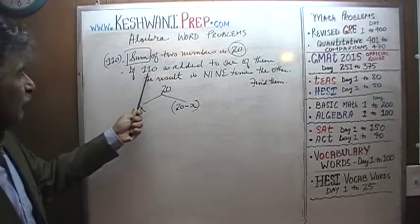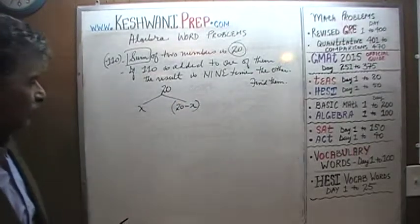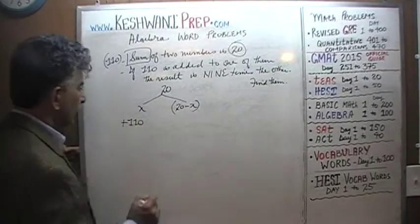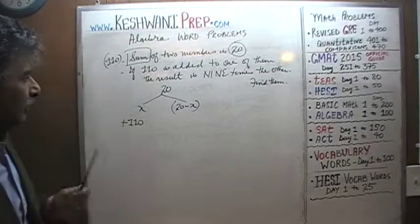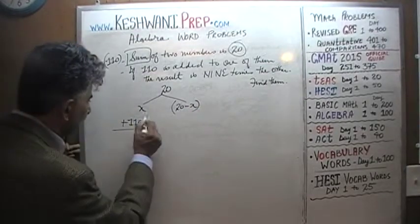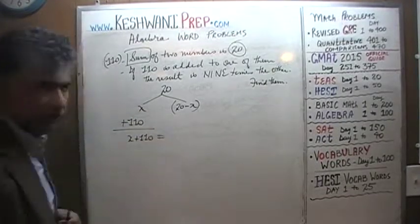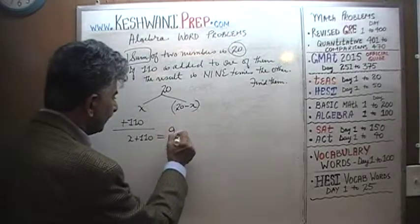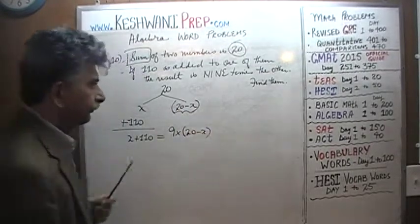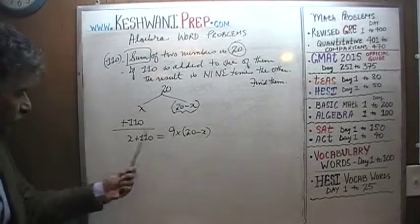We are further told that if we add 110 to one of them — let's add it to X — the result is 9 times the other. So X plus 110 equals 9 times (20 minus X). That's all it is. Now we just solve for X.